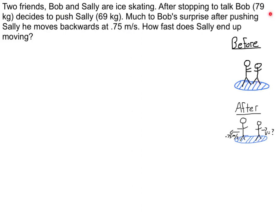Bob, 79 kilograms, decides to push Sally, 69 kilograms. Much to Bob's surprise, after pushing Sally he actually moves backwards at 0.75 meters per second. How fast does Sally end up moving?